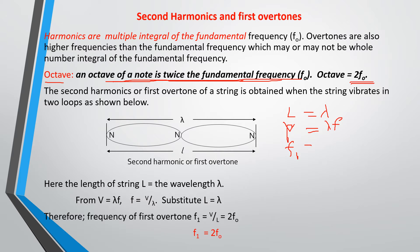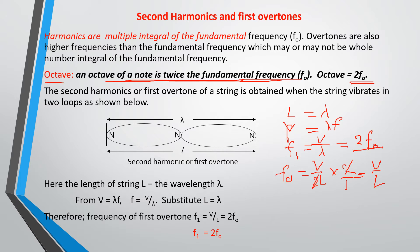From V equals lambda times f, f₁ equals V over lambda. Comparing to the fundamental frequency f₀ equals V over 2L, if you multiply by 2 you get V over L. This means the first overtone f₁ equals 2f₀ — twice the fundamental frequency. That is the first overtone for a vibrating string.